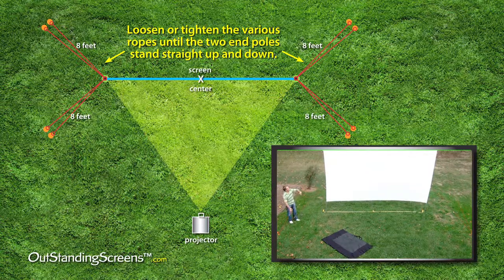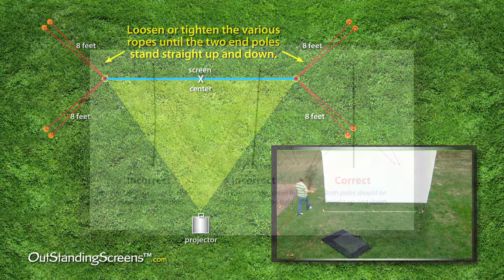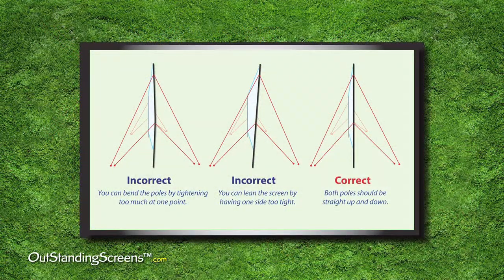Because of the rope system, you can tilt the screen back or forward if you need to adjust for a slope. Look to see that the poles are both straight and straight up and down as in the illustration.